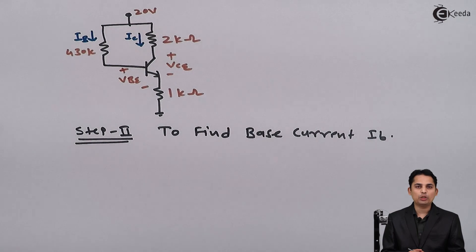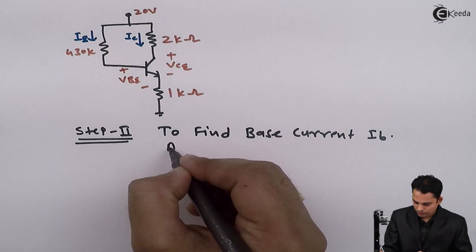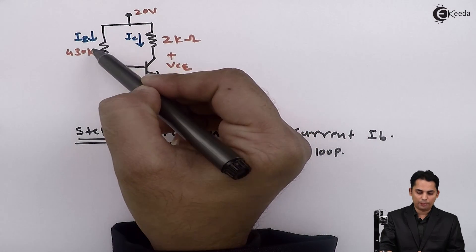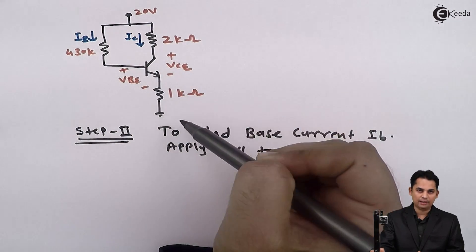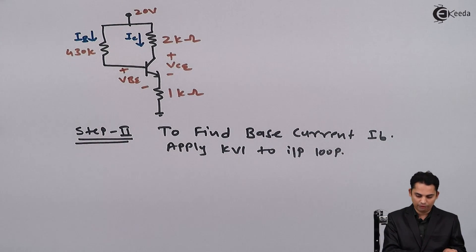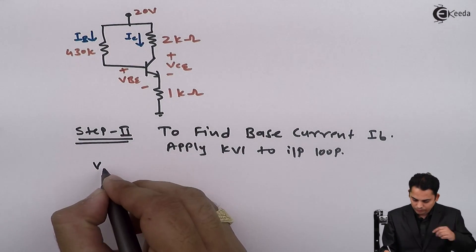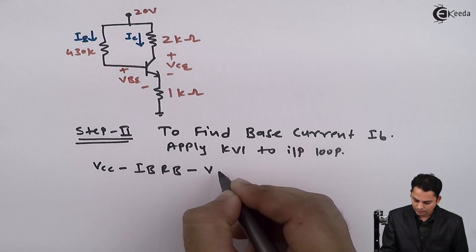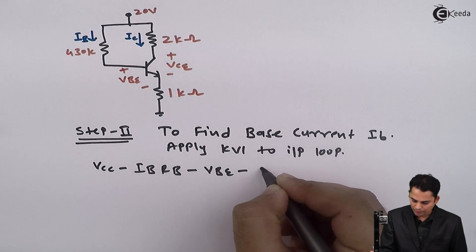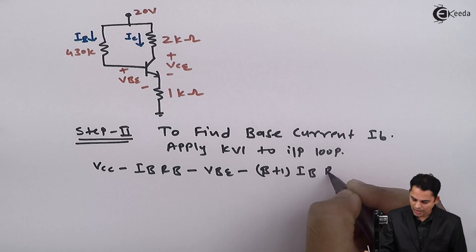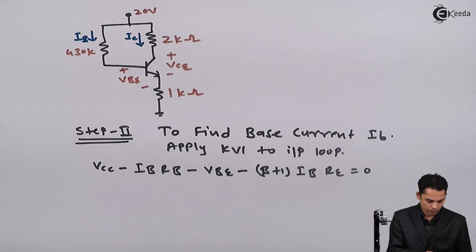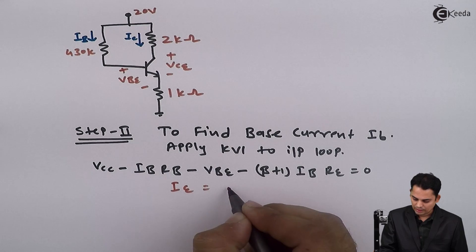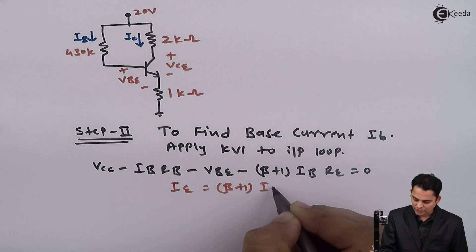In order to find out base current IB we need to apply KVL to the input loop. Input loop will start from VCC, we will go to the base resistor, then base to emitter voltage, then RE, and then ground. So applying the KVL in that direction we will get that VCC minus IB into RB minus VBE minus beta plus 1 times IB into RE is equal to 0. We can write this because emitter current IE is given as beta plus 1 times of base current IB.